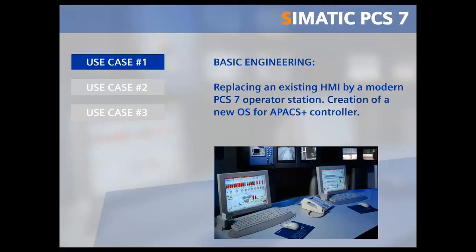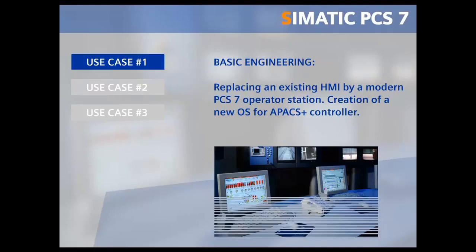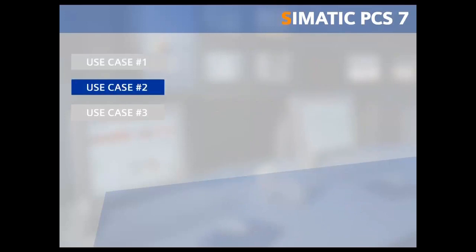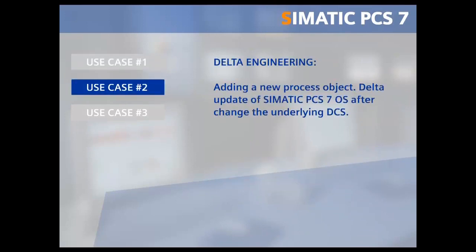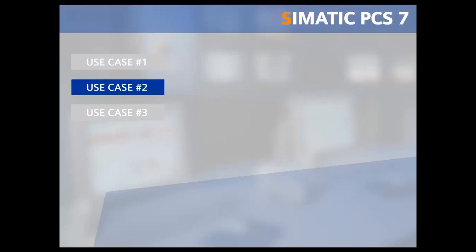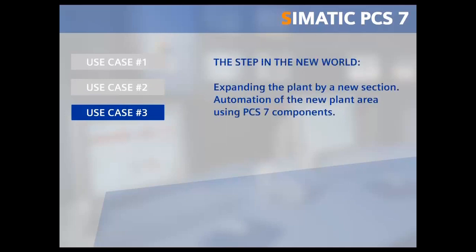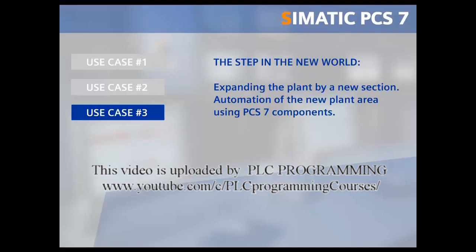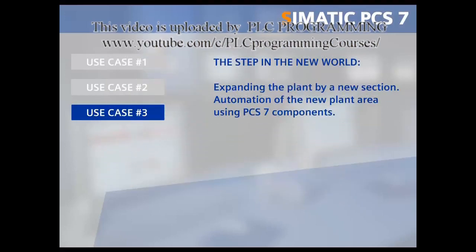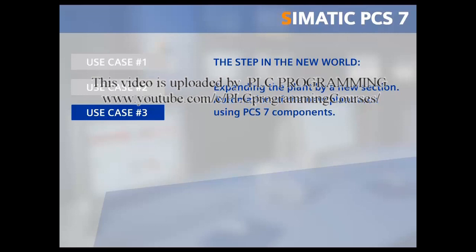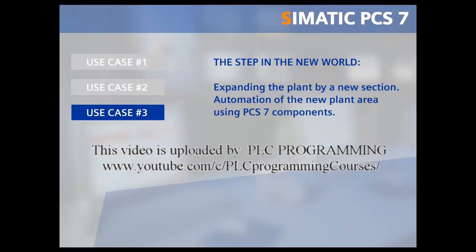You will also see how the migration products not only save a tremendous amount of time and effort, but also how they exclude accidental errors right from the beginning. In the second use case, a process tag is added to an existing plant, inserted online in the operator station during operation without affecting process control. In the third and last use case, a plant is expanded by a new section using PCS7, and the operator is able to control and monitor the new section alongside the previous legacy system.